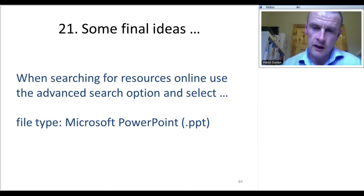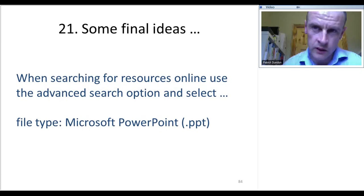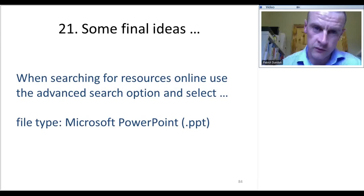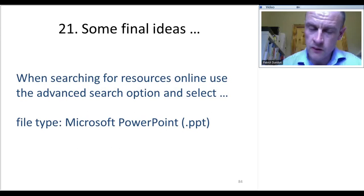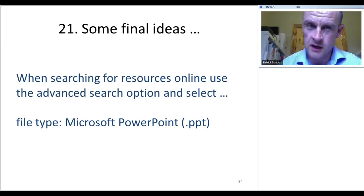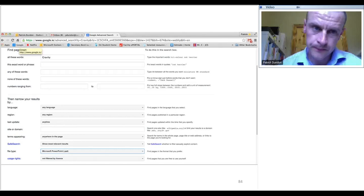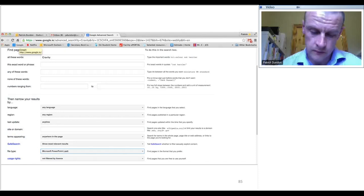A random but useful tip: when looking for resources, use the advanced search option on Google. Often it's PowerPoints you're looking for — just select PowerPoint as the file type. This may seem very simple, but it saves a huge amount of time going through pages and pages of results. You just select PowerPoint in the advanced search options.